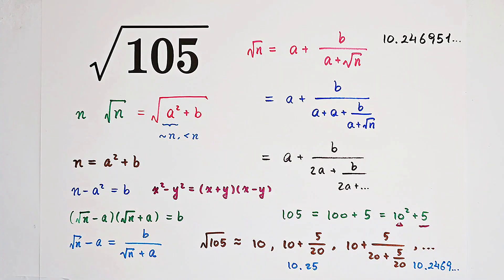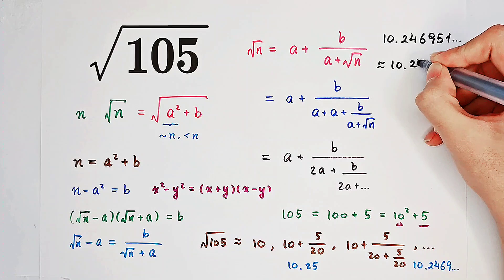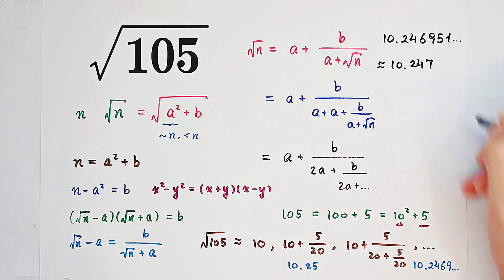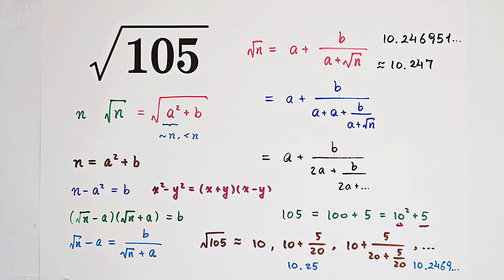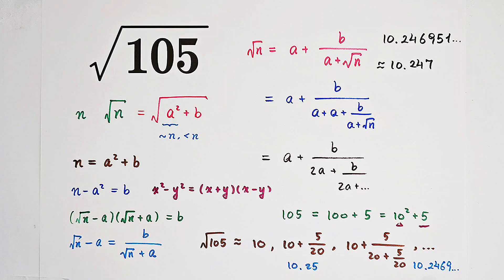So, it's approximately equal to 10.247. And you can see, we only have to take two fractional lines. And our approximation is really spectacular, really splendid.